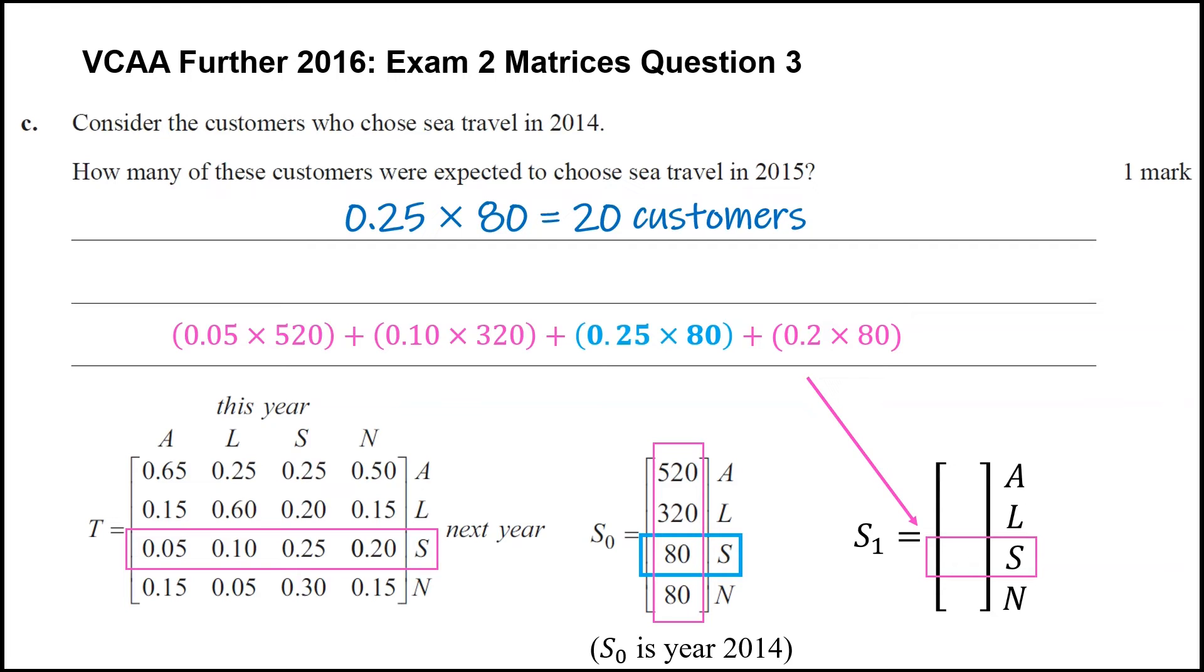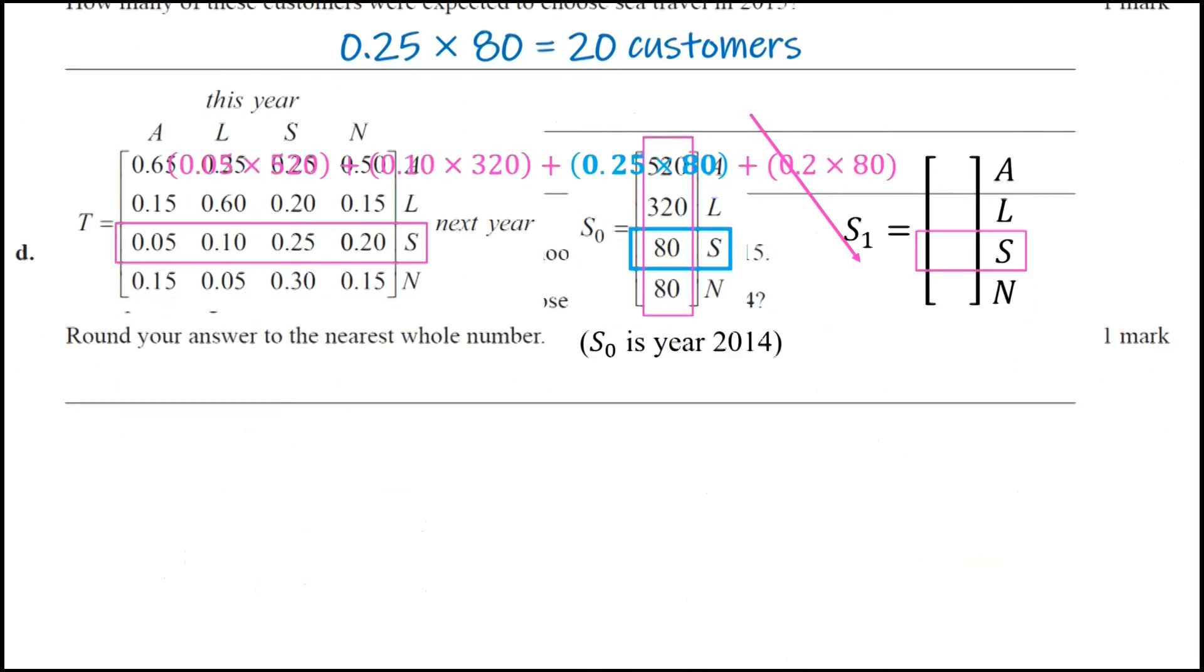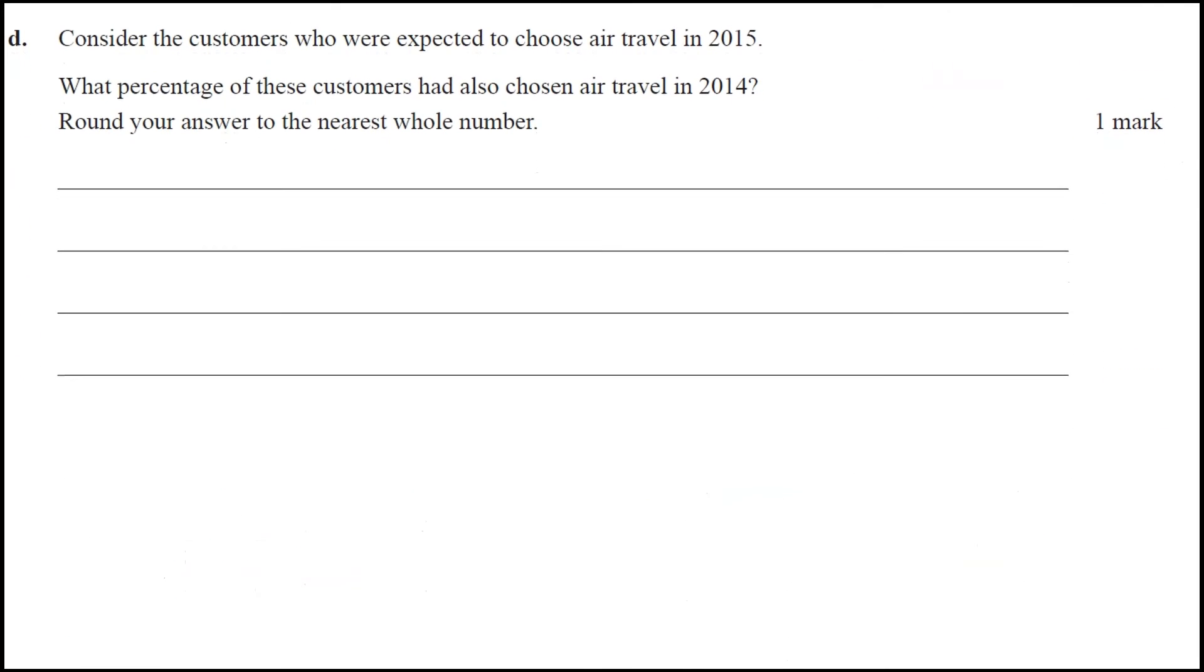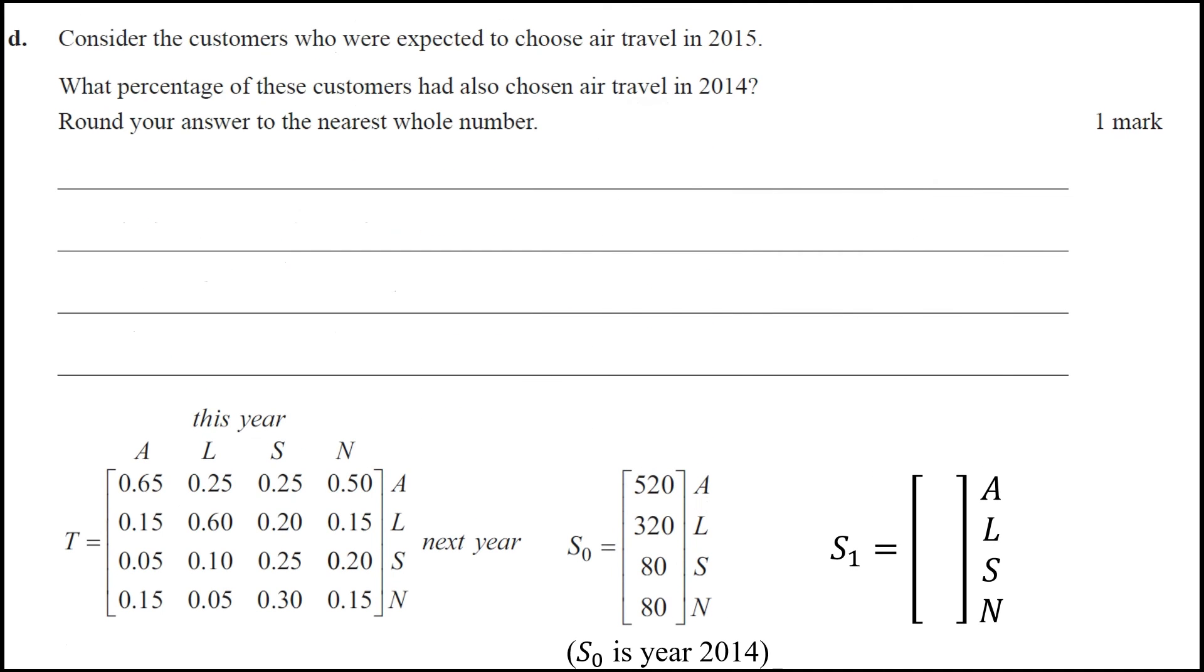Okay, so feel free to watch that again if you want to digest it a bit more. But let's look at part D, which is a similar thing, but the opposite way around. Of those who chose air travel in 2015, what percentage of them would have chosen air travel in 2014?